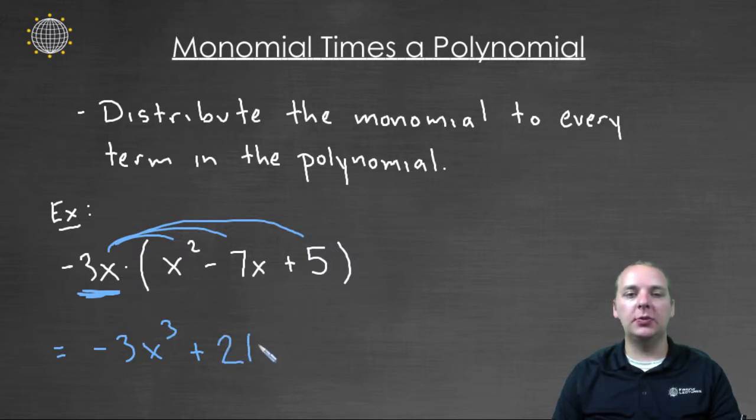and x times x would give us x². And for the last term, we'd have negative 3x times positive 5, that would give us negative 15x. So we'd have minus 15x, and we're done.